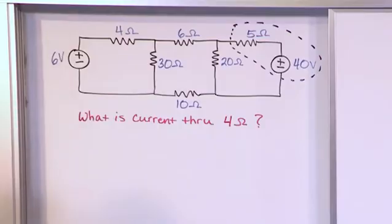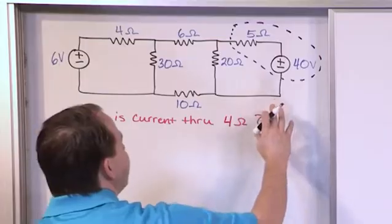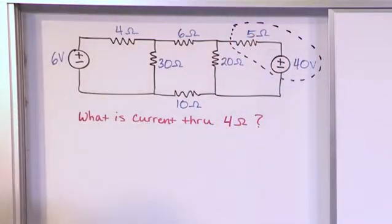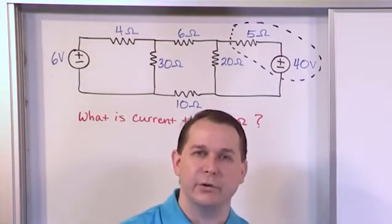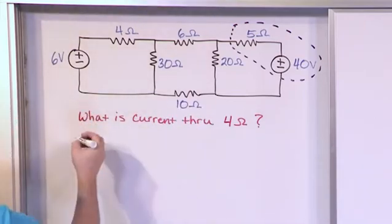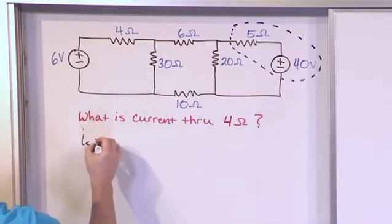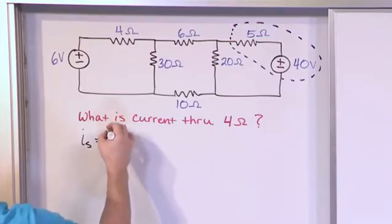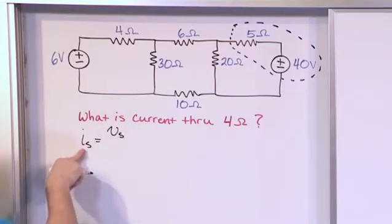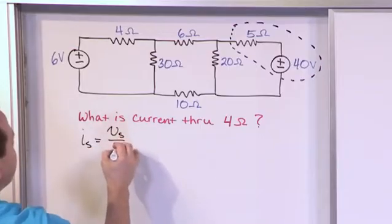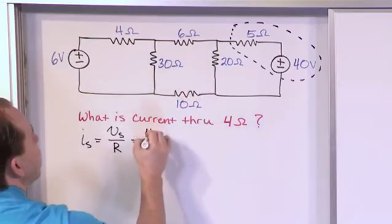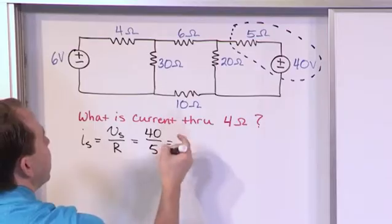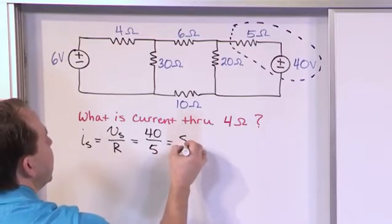So if you remember back to the previous section we talked about source transformations. When you take a voltage source that's in series with a resistance and you transform it into a current source in parallel with this 5 ohm resistance, you have to calculate the value of the current source you need. And that value is I sub s, which is the new source current is equal to the old source voltage divided by the resistance you have. I is equal to V over R, it's just Ohm's law. In this case it's 40 volts and the resistance is 5 ohms, and so 40 by 5 you're going to get 8 amps.